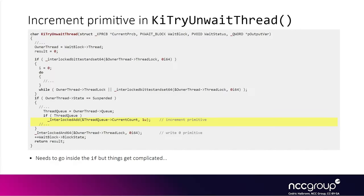I am sure you recall this KiTryAndWaitThread function by now. There was a wait block that we controlled, and then we crafted a fake owner thread and had to pass the spin lock, so we needed the lower bits of the thread lock to be zero initially. Then we would craft a fake state field to be not suspended so we could skip the if loop, and then we would reach the write-zero primitive that would allow us to change previous mode to zero. We would then return back to the vulnerable function. However, there is another interesting code path in this function that gives us an increment primitive.